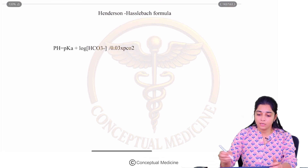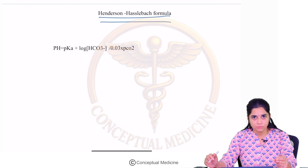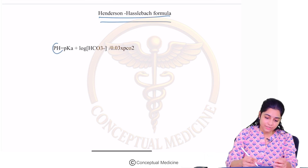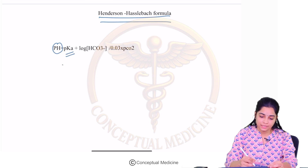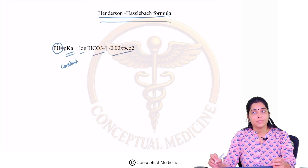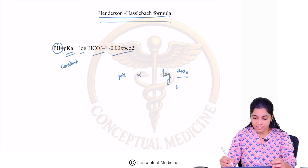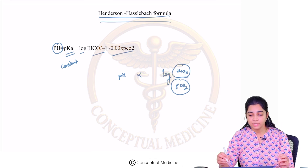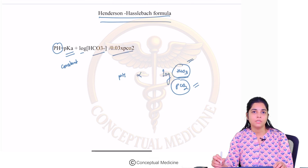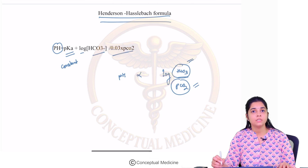Now let us understand the Henderson-Hasselbalch formula. The pH is given by the formula: pKa (constant) plus the logarithm of bicarbonate divided by 0.003 times pCO2 levels. In other words, pH is proportionate to the logarithm of bicarbonate divided by pCO2. This means the pH — which reflects the acid-base status in our body — is dependent upon the bicarbonate levels as well as the pCO2 levels.